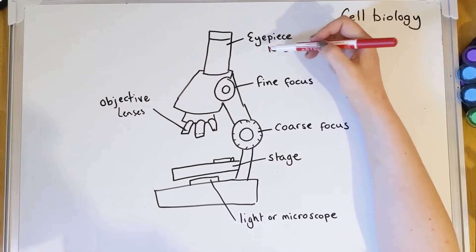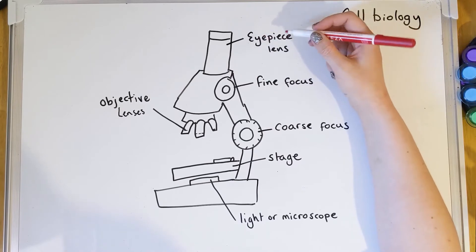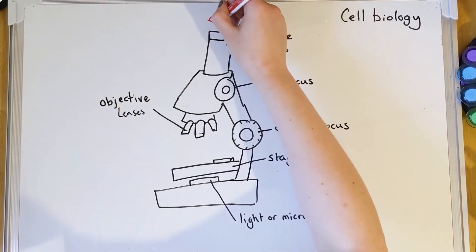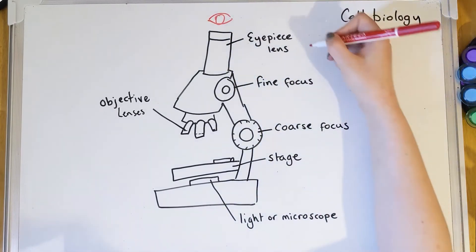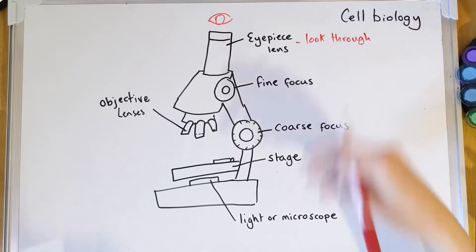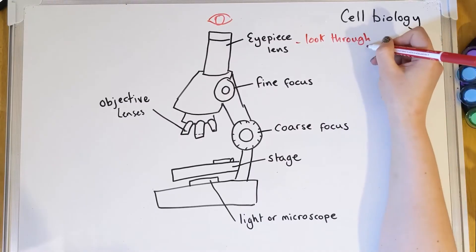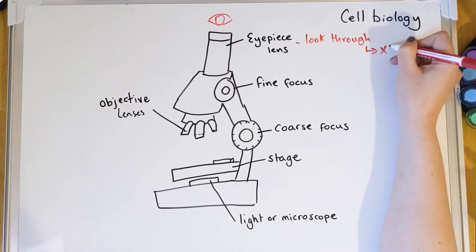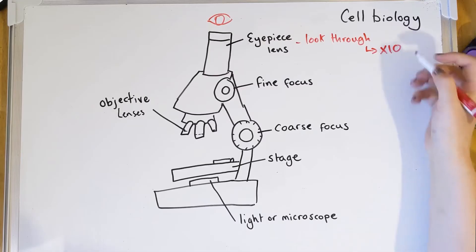Starting from the top and working our way down: the eyepiece lens — clue's in the name — this is where you look down through the microscope. It is a lens itself, and lenses are to do with making images clearer and larger. This one usually has a lens that's times 10, so whatever you look through it is 10 times bigger than real life. That's going to be important later.